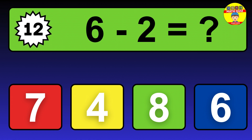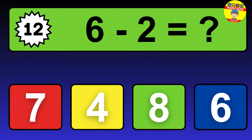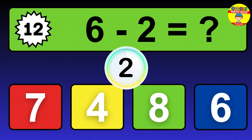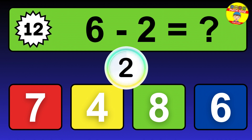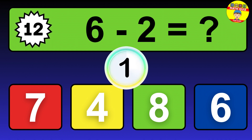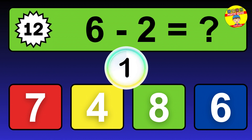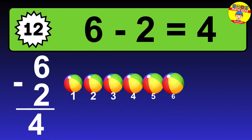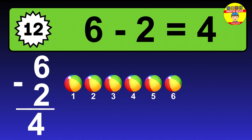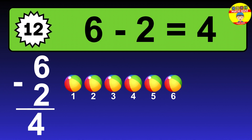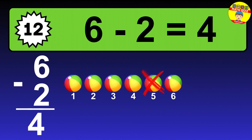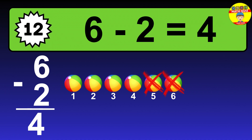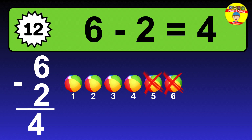Question 12. 6 minus 2 equals what? The answer is 6 minus 2 is 4. Let's count it: 1, 2, 3, 4.